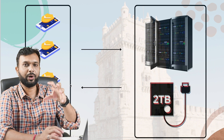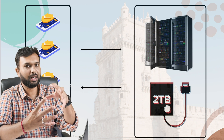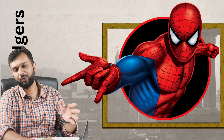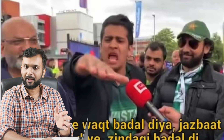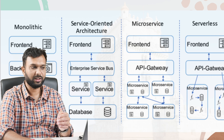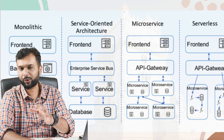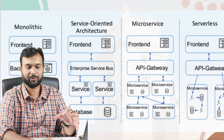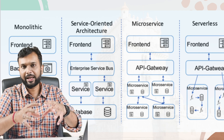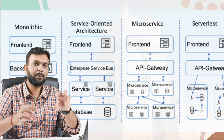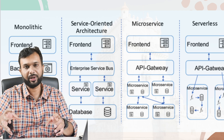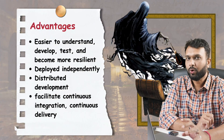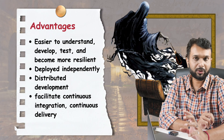In earlier days there used to be a monolithic architecture — one application deployed with all functionality bundled at one place. Then things changed entirely. Now we have monolith, service-oriented architecture, microservices, and serverless architecture. Serverless is basically on the cloud, and microservices means we are separating the entire product into small chunks and deploying them on different servers — some on Kubernetes, some on Docker.